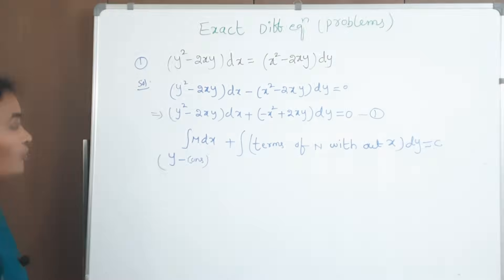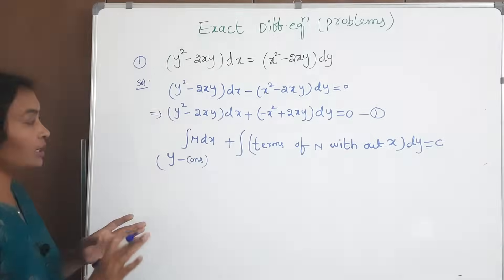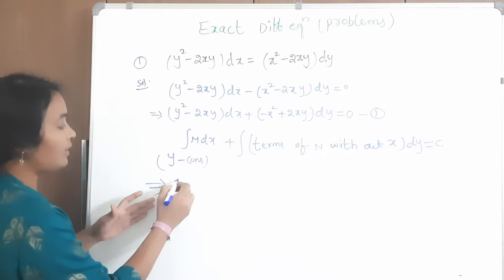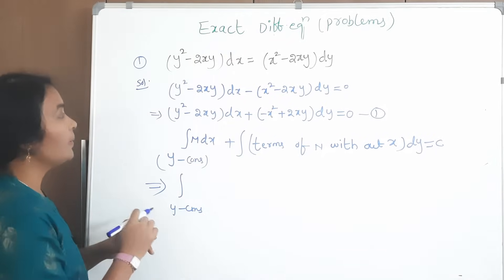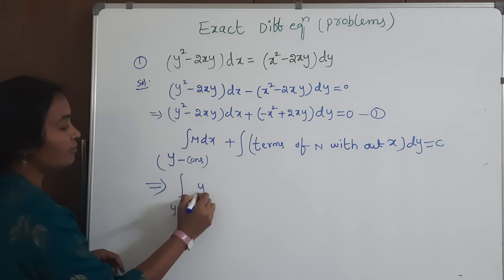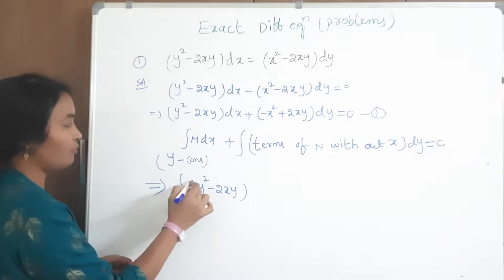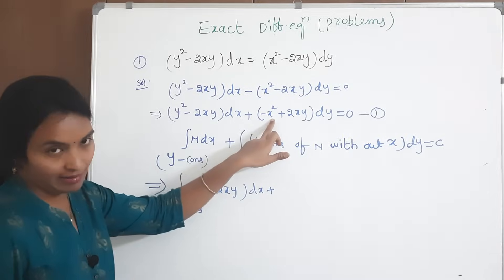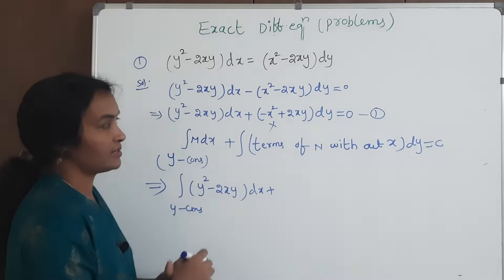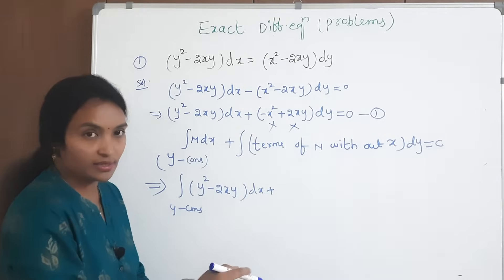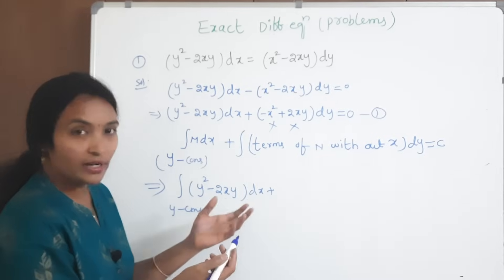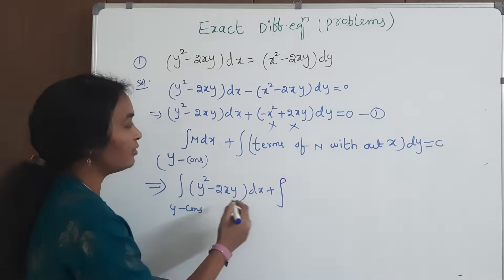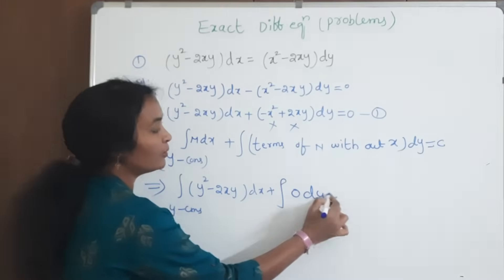Now, M dx with y constant: M is y² minus 2xy. Observe — in this M, this term has x and this term also has x. What remains without x? Nothing is left over. So the second integral term becomes 0.